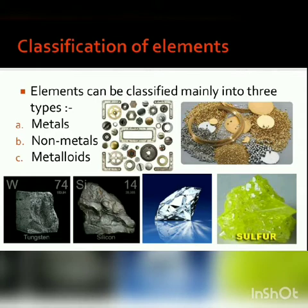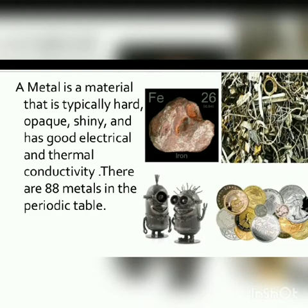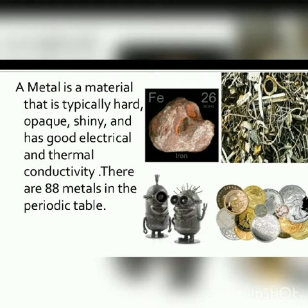These 118 elements are classified into three types: metals, non-metals, and metalloids. We are going to study metals and non-metals. A metal is a material that is typically hard, opaque — meaning we cannot see through it — shiny, and has good electrical and thermal conductivity, meaning it can conduct both electricity and heat.